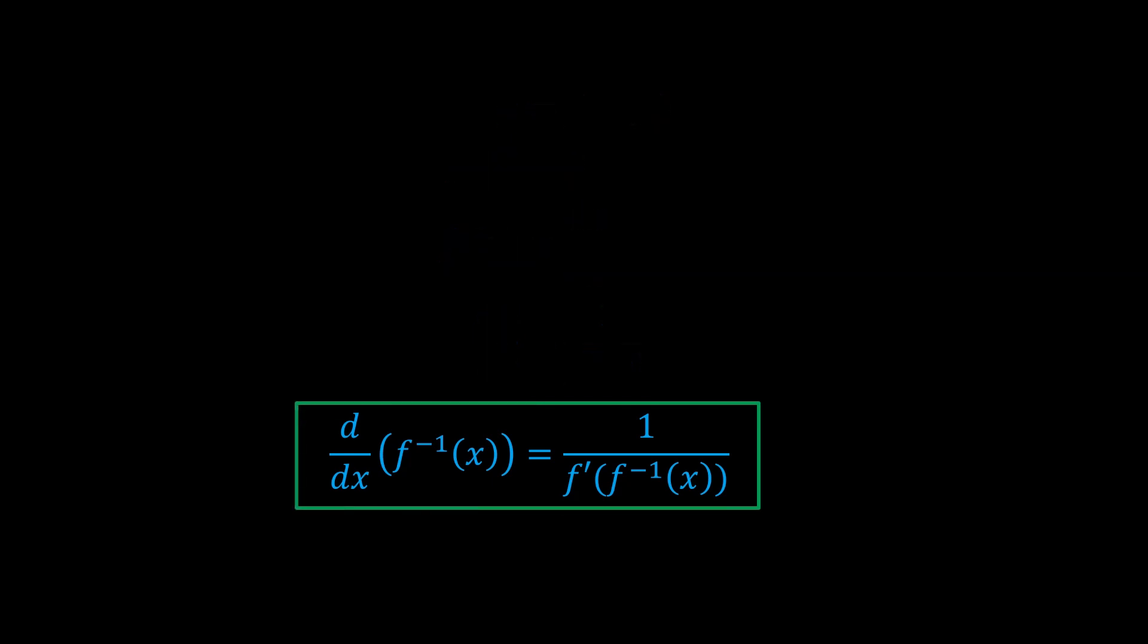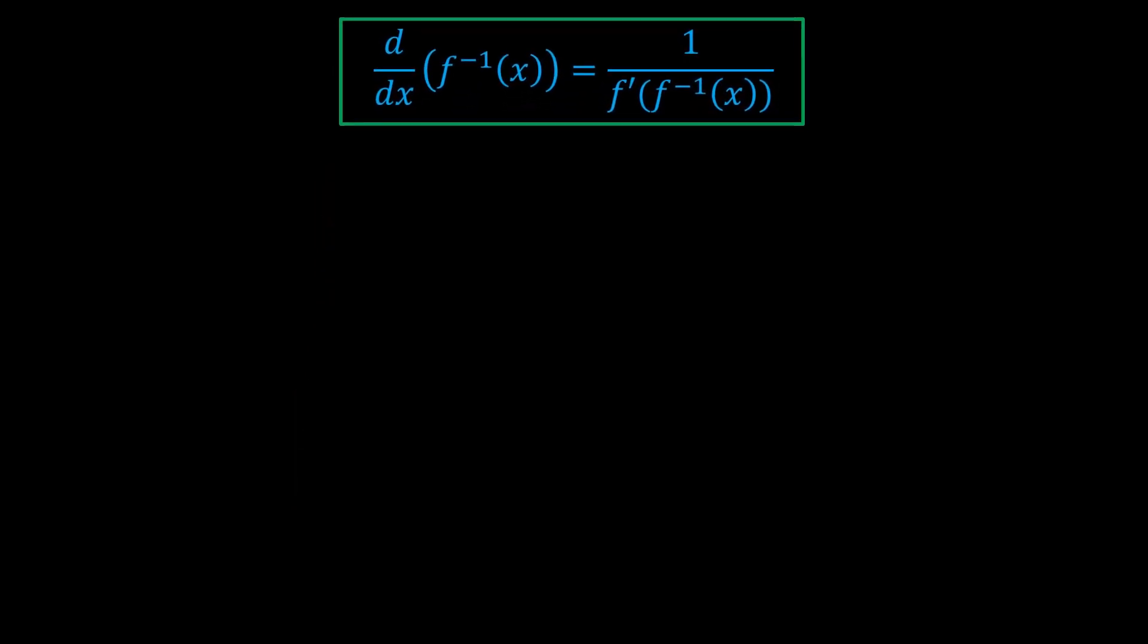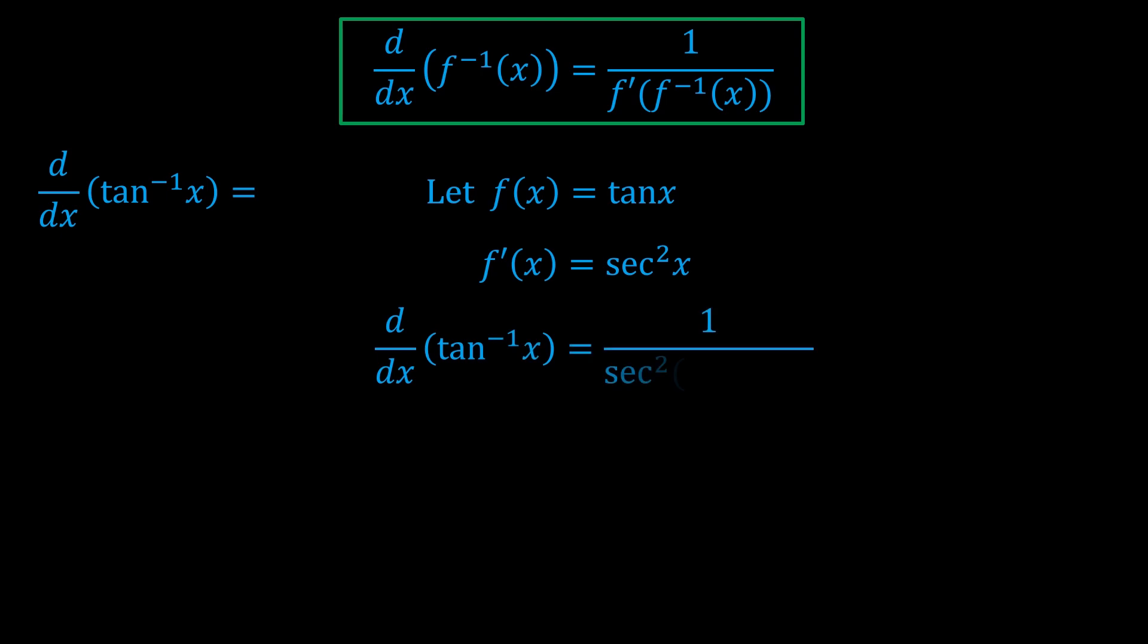So how can we use this formula to find the derivative of the inverse trig functions? The derivative of inverse tan can be calculated if we let f of x equal tan x. So that means f prime of x equals sec squared x. Now plug into the formula, we get this.